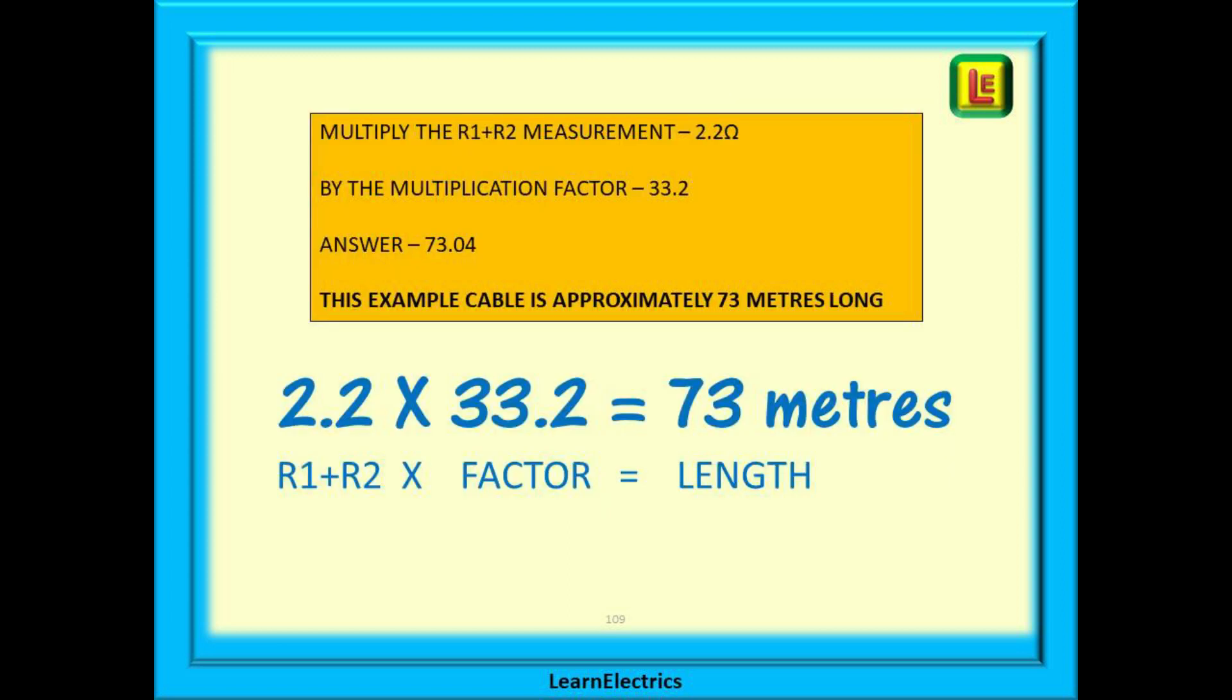Now, multiply the R1 plus R2 measurement, which is 2.2 ohms, by the multiplication factor, the 33.2 from the table. Your answer should be 73.04 metres, which is almost the same as 73 metres.